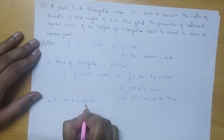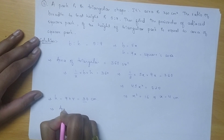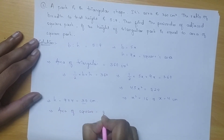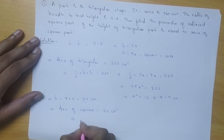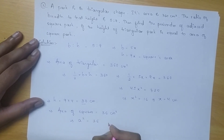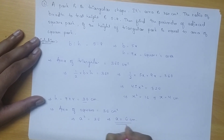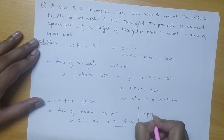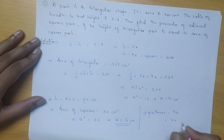The height will be equal to 9 multiplied by 4, which is 36 cm. As it is given that the height is equal to the area of the square park, the area of the square park will be 36 cm square. Assuming the side of the square is A, A square equals 36, giving A equal to 6 cm. Therefore, the perimeter equals 4A, which is 4 multiplied by 6, equal to 24 cm.